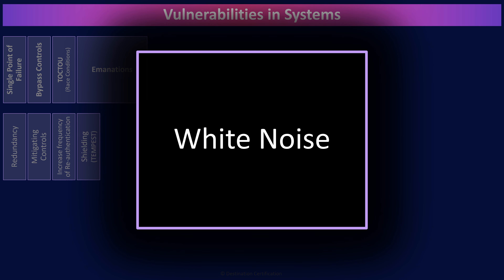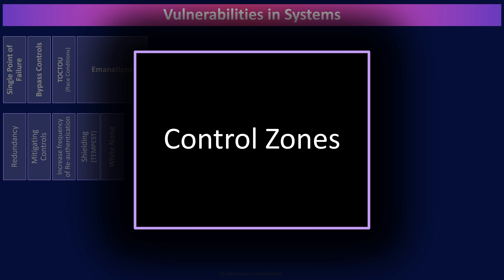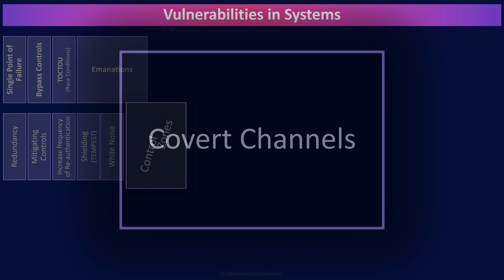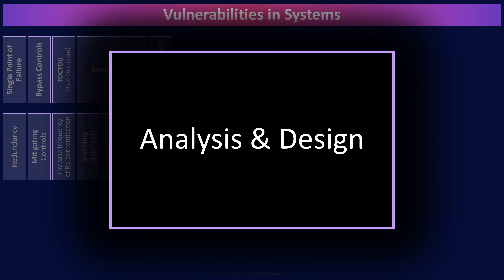The next method that can be used to reduce the risk of emanations is white noise — blasting out strong random signals, drowning out the weak emanations from a secure device in the sea of white noise. And finally, control zones, which means placing high-value systems in physically secured zones. Put in place physical security controls to ensure only authorized individuals can get near a high-value system and thus prevent an attacker from getting close enough to detect the emanations. The next vulnerability is covert channels, which are unintentional communication paths that can be used to disclose confidential information. There are two major types of covert channels: storage and timing. Covert channel vulnerabilities can be addressed by careful analysis of systems and processes to identify these unintentional communication paths and design controls to prevent or mitigate them.